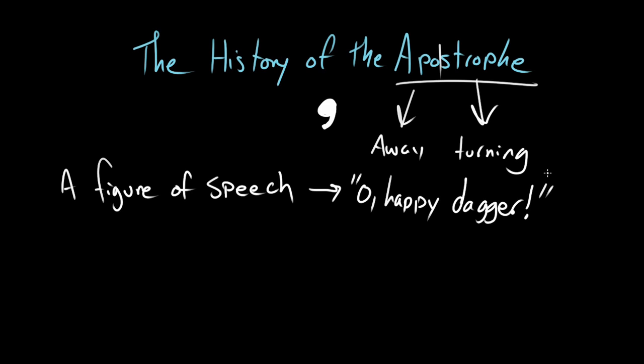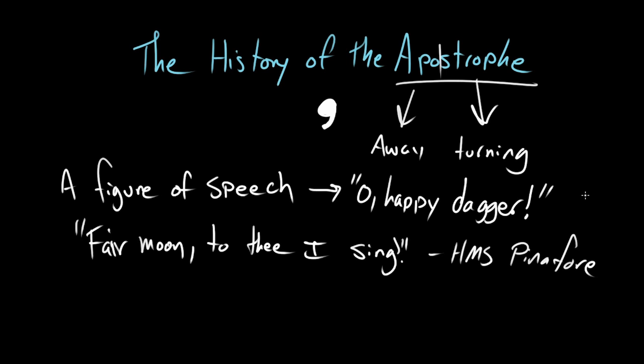Or, on a lighter note, perhaps, from HMS Pinafore, there's a song, fair moon to thee I sing, bright regent of the heavens. It's the moon, the moon can't talk back. And from this figure of speech, this is where we get the idea that an apostrophe represents something that is missing. That's how we come to get its main use, to represent absent letters, just like an apostrophe in rhetoric would be delivered to absent friends.